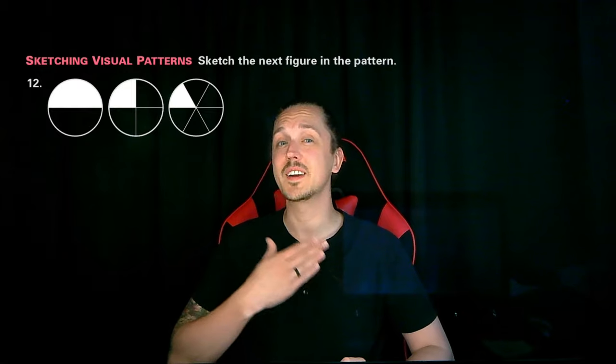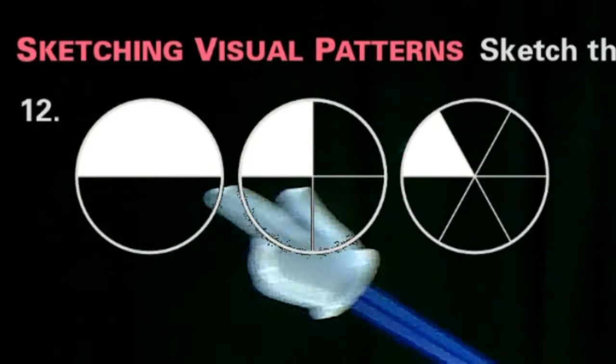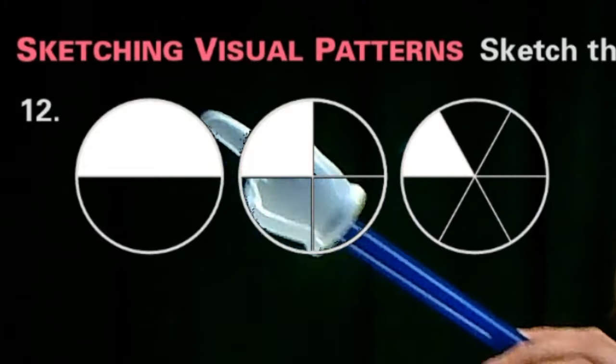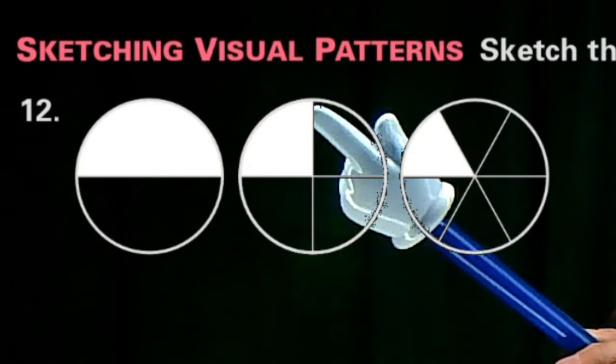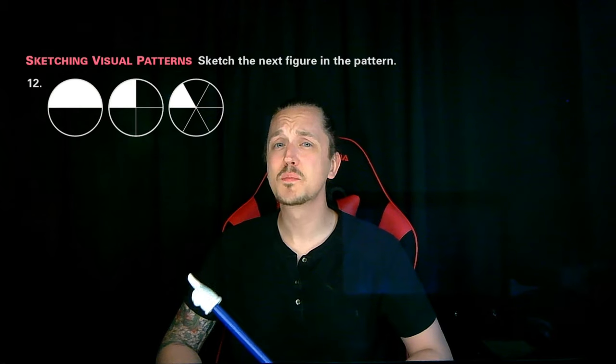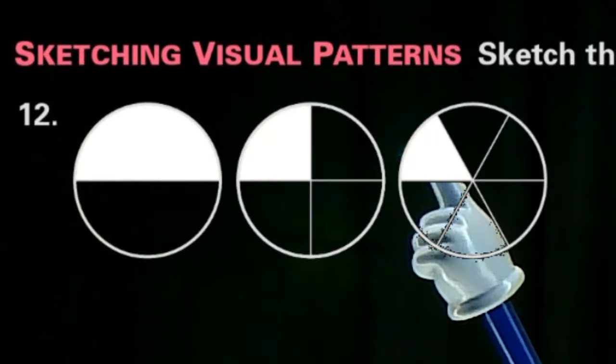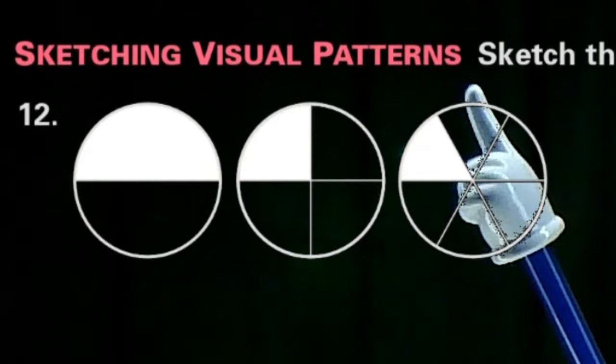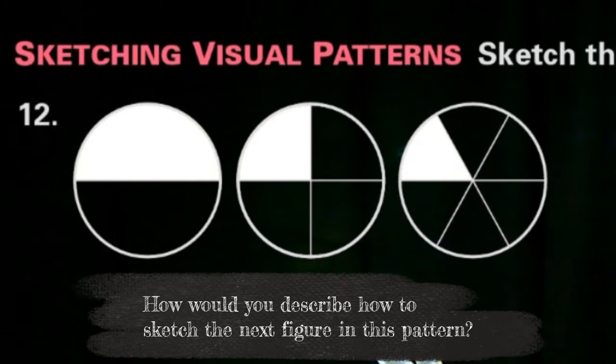Let's take a look at our pattern here. I first noticed that each figure in our pattern is a circle, and each of those circles is split into multiple parts. Not only this, but one of the parts in each circle is colored white, while the rest are not. How would you describe how to sketch the next figure in this pattern?